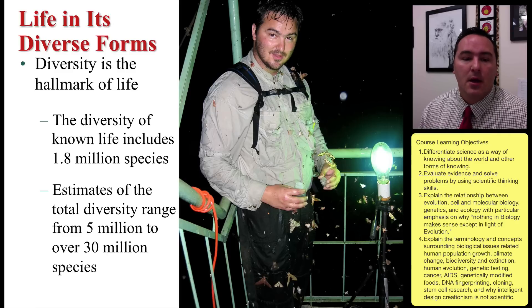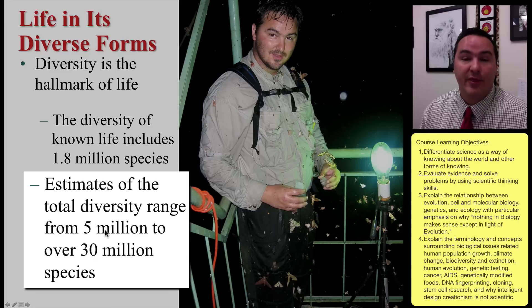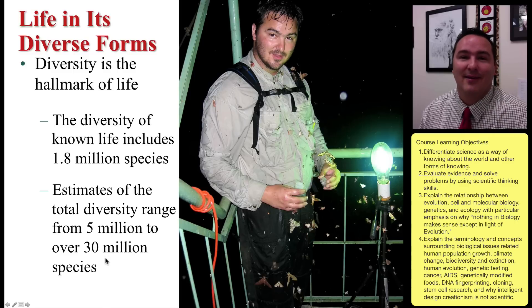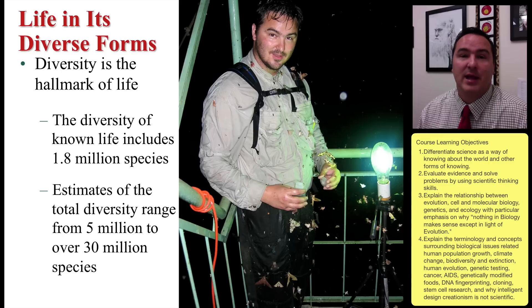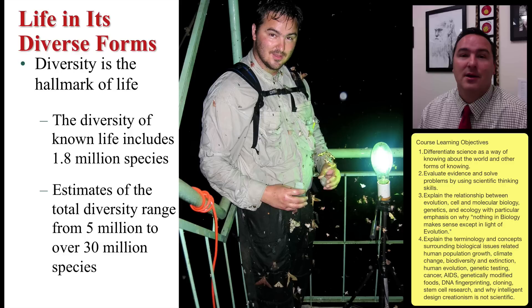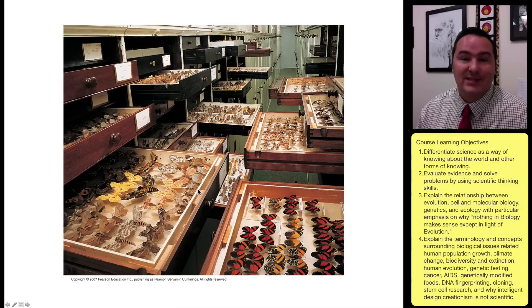The number of described species is about 1.8 million — those are only species we've actually given a name to. But if you look at all the species alive right now, estimates suggest somewhere between 5 and 30 million. And if you ask how many species have ever lived on this planet at any time, you need to increase that number about a hundred times — what is alive right now represents less than one percent of what has ever lived. Ninety-nine percent of all life has already gone extinct.